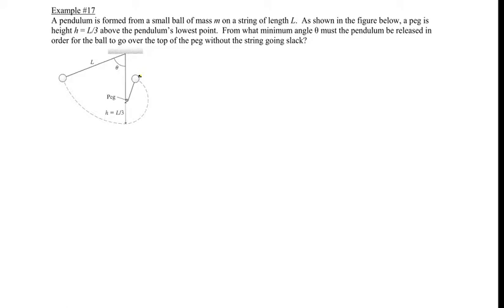So we're asked to find out what minimum angle would this pendulum would have to be released at so that when it hits this peg and the string catches the peg, it's going to form this circle here such that when it travels at the top of this loop here that the string won't go slack.